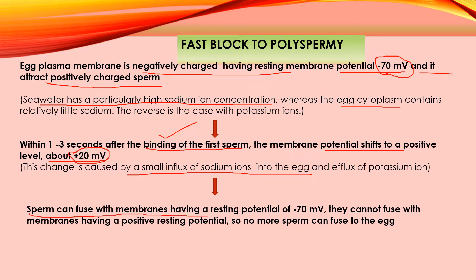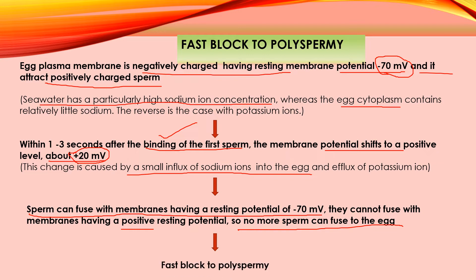The sperm fuses with the membrane that has a resting potential of minus 70 millivolts. When the membrane potential of the egg plasma membrane changes from negative to positive, no more sperm can fuse with the egg. This leads to the block of polyspermy in sea urchin, and this is called the fast block to polyspermy.